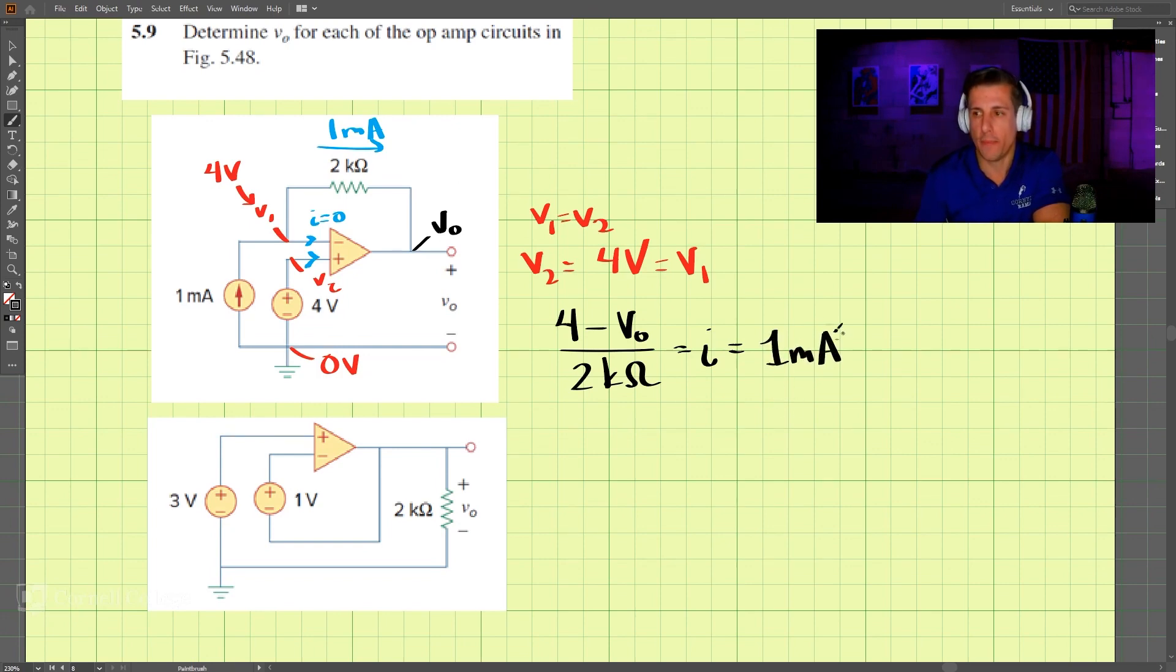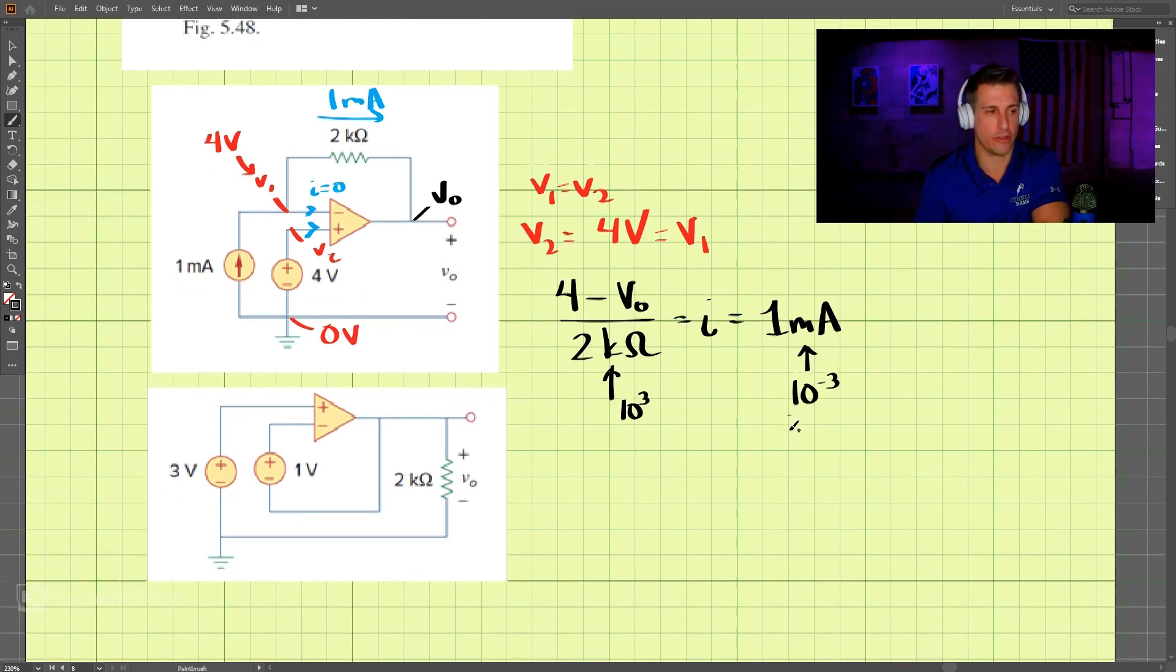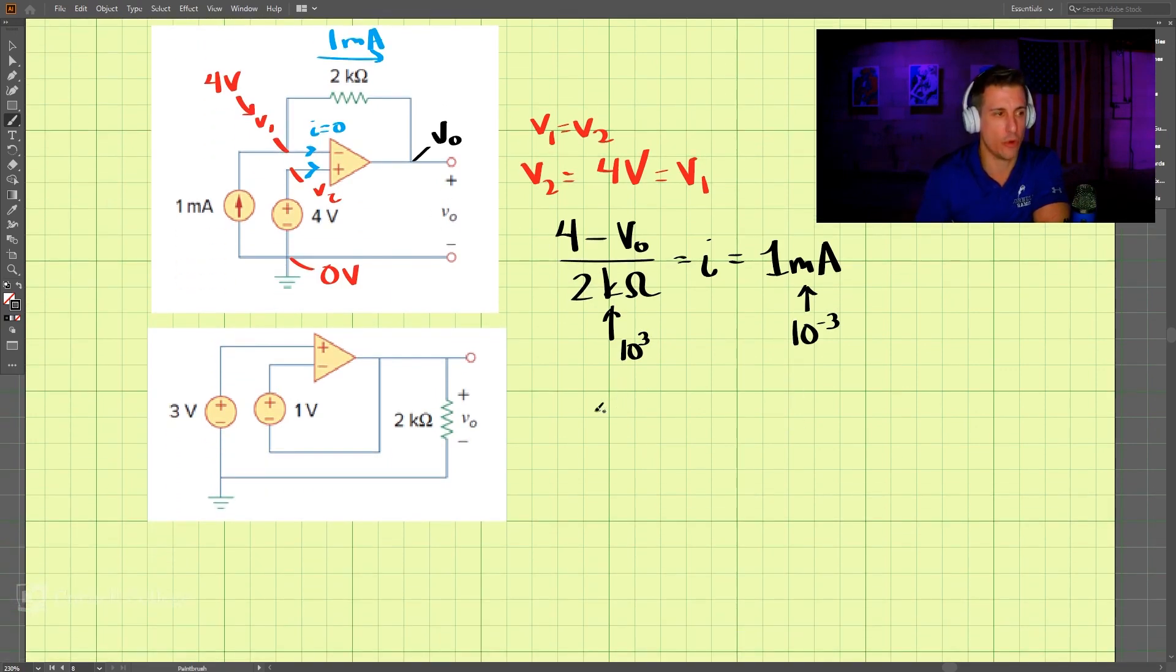Remember that one milliamp is 10 to the negative third and kilo-ohm here is 10 to the third. So when we take two times one, these two will cancel out. We get four minus v0 is equal to two, and by doing this we find out v0 is equal to two volts.